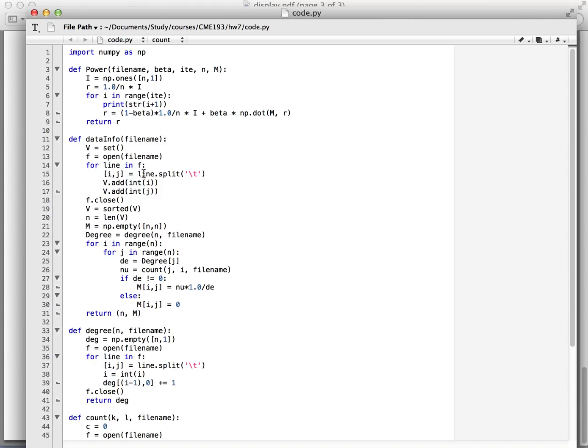We define the data info function to get information about the file. We read the file lines one by one to get the list of vertices and the number of vertices. During the process, we use set to avoid duplicate vertices. Then we initialize M to be 0. Since there may be multiple edges from j to i, the element M should be the number of edges from j to i divided by the out-degree of j. We need to notice that if the out-degree of j is 0, then Mij equals 0.